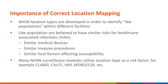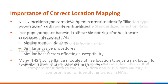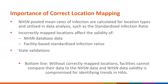NHSN surveillance modules, especially the patient safety component, utilize the location type as a risk factor. It is really important to correctly map locations in order to understand how HAI rates are split by each individual location type. NHSN pulls the main rates by location type, so if a location is incorrectly mapped, it can affect the validity of not only your local data in comparison to the national data, but also our national database.